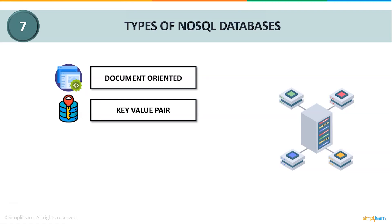Next we have key-value pair databases. Data is stored as key-value pairs in the form of a hash table. Each key is unique, and the value may be an integer, string, binary object, or JSON object. The key-value store is the simplest database among all NoSQL types. Redis and Oracle Coherence are examples of key-value store databases.